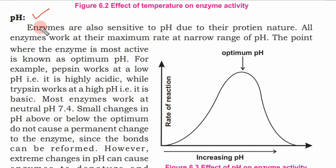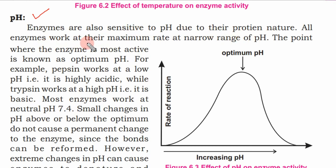The third factor affecting enzyme activity is pH level. Enzymes are also sensitive to pH due to their protein nature. All enzymes work at maximum rate within a narrow range of pH. The point where the enzyme is most active is known as the optimum pH.